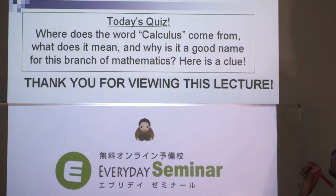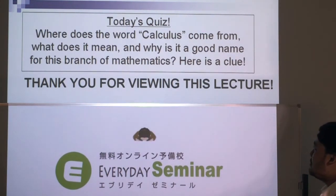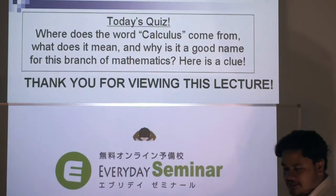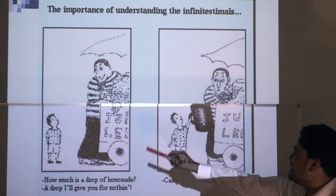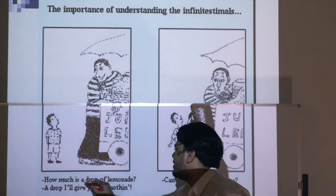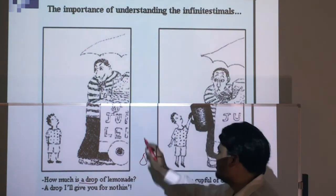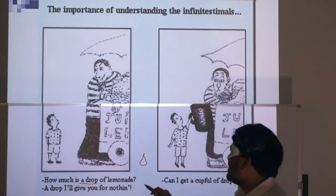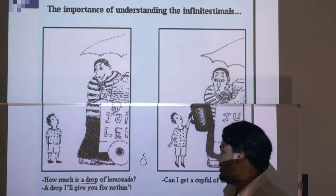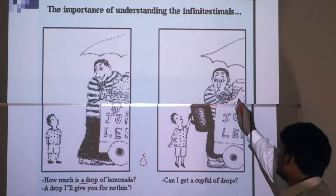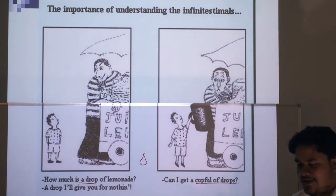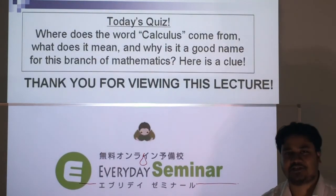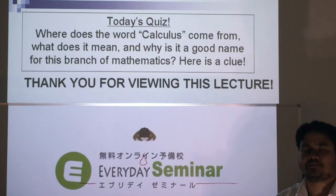That brings us to today's quiz: where does the word calculus come from? What does it mean, and why is it a good name for this branch of mathematics? Here's a clue — have a quick look at this cartoon. This kid is asking a man how much for one drop of lemonade, and the man says a drop he'll give for nothing. So the little boy goes: can I have a cup full of drops? Think about it. Thank you for viewing today's lecture — hope to see you next time with Everyday Seminar.